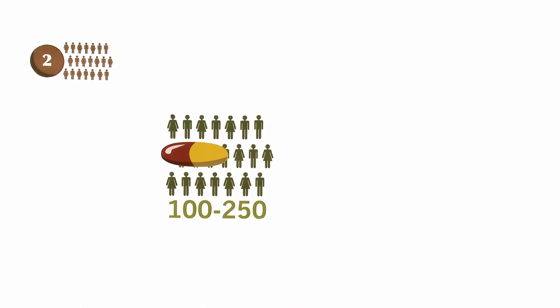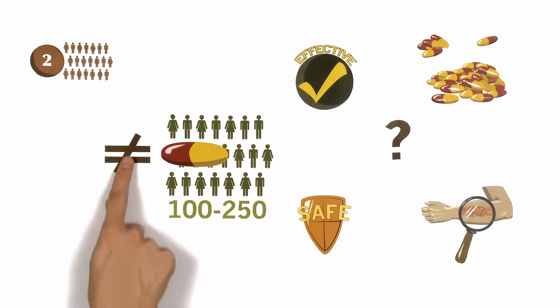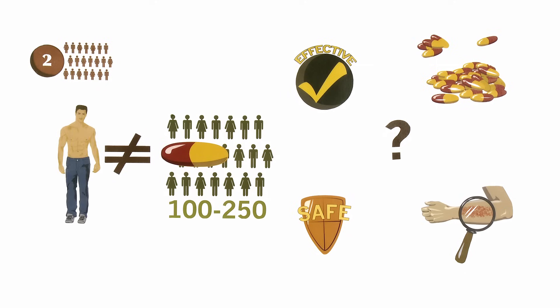In Phase 2, the drug is given to a group of about 100 to 250 patients with the disease to evaluate its efficacy and to determine the optimal dose. In addition, the safety of the drug and its side effects are evaluated, as these may be different in patients compared to the healthy volunteers tested in Phase 1.